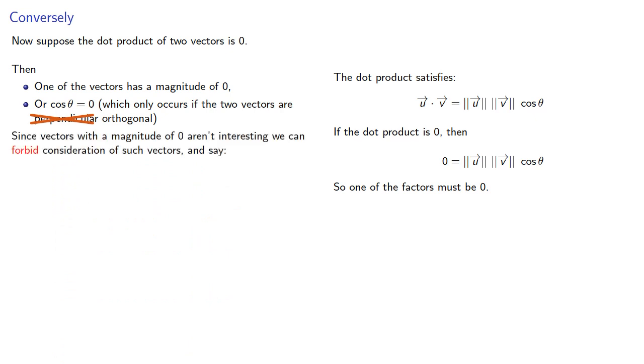Since vectors with magnitude 0 aren't interesting, we can forbid consideration of such vectors and say that if two non-zero vectors have dot product 0, then they are orthogonal.